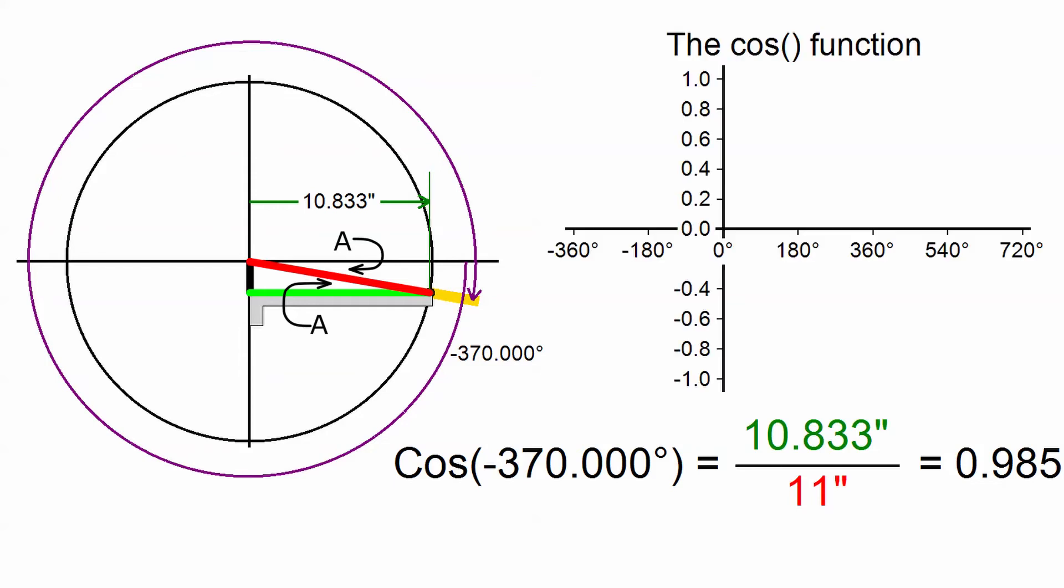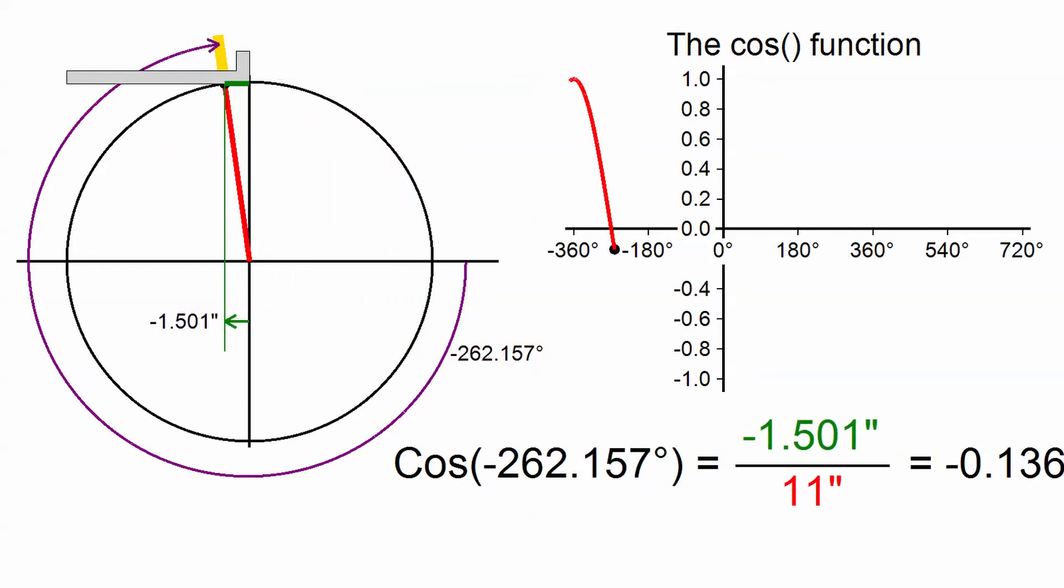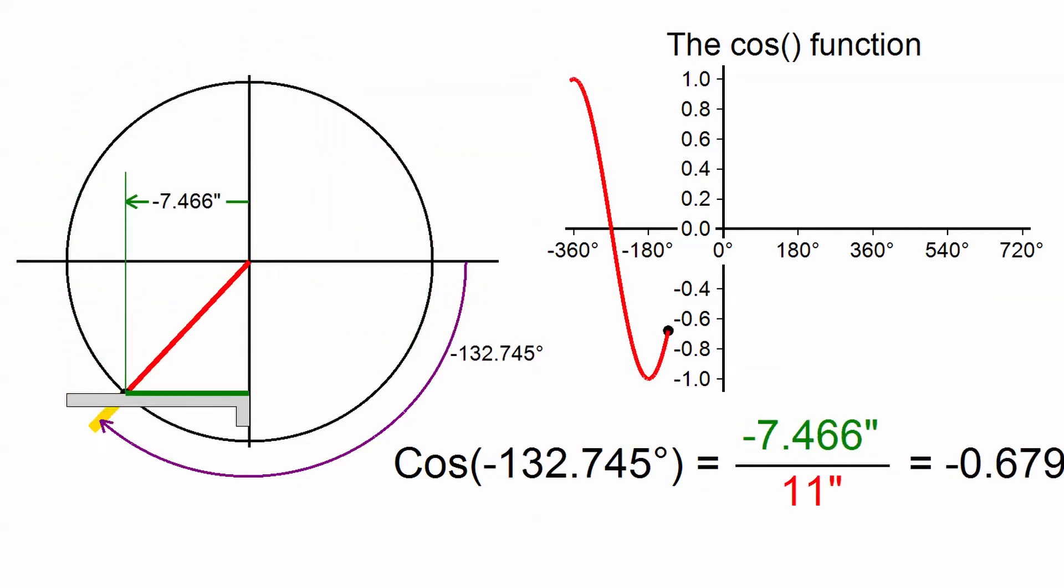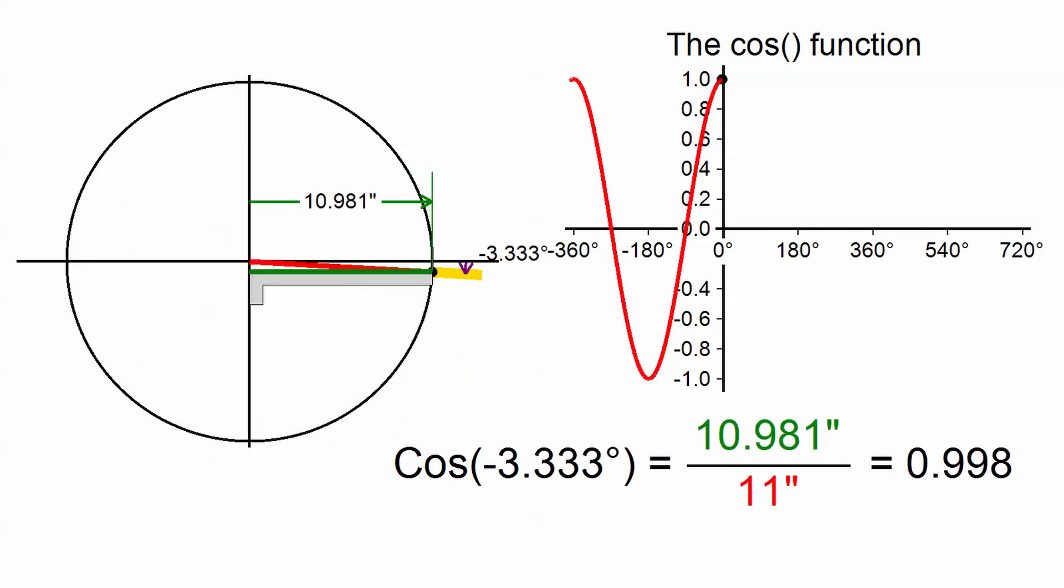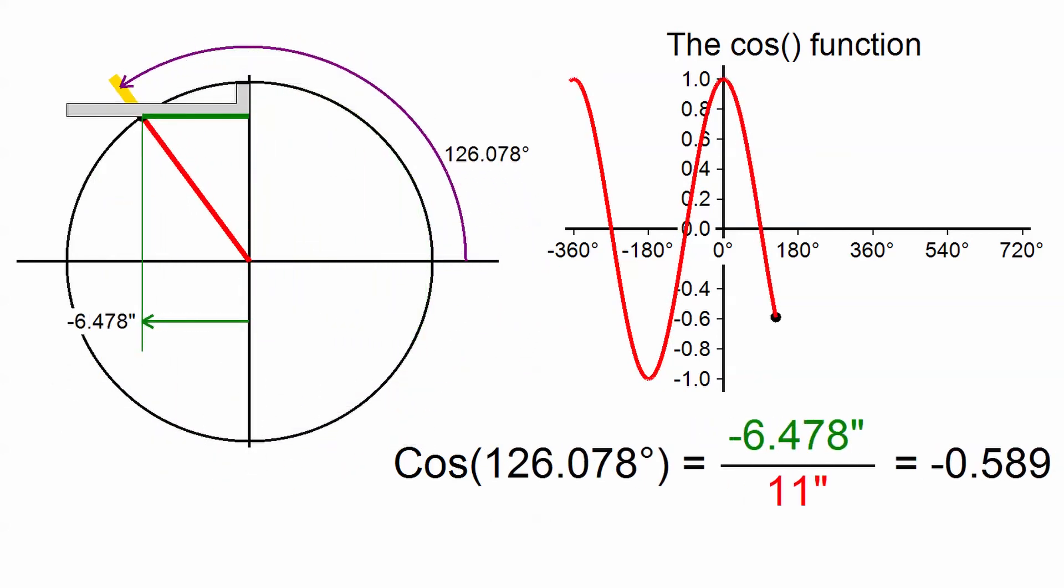I'm going to plot the values for the cosine function on the same graph as before. This point on the graph marks the protractor's current position at an angle of minus 370 degrees, at which the value of cosine is 0.985. I'm going to make three counterclockwise circumnavigations around the wheel. I'll stop when the angle reaches 730 degrees.